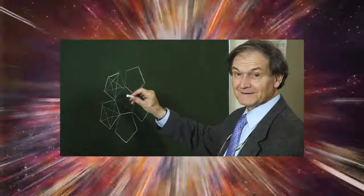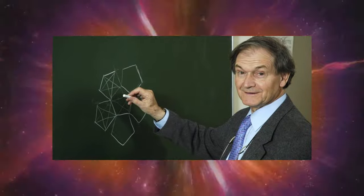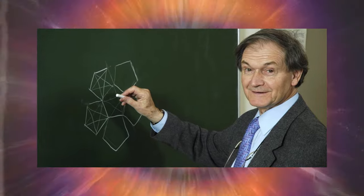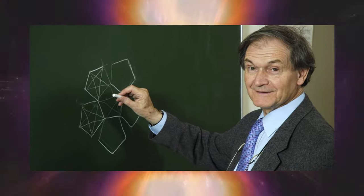Instead of conceiving of the universe as a single event, with the Big Bang marking the beginning and the remote future representing the end, Roger Penrose posited that this is just one eon, one stage in a possibly infinite succession of eons following one after another.